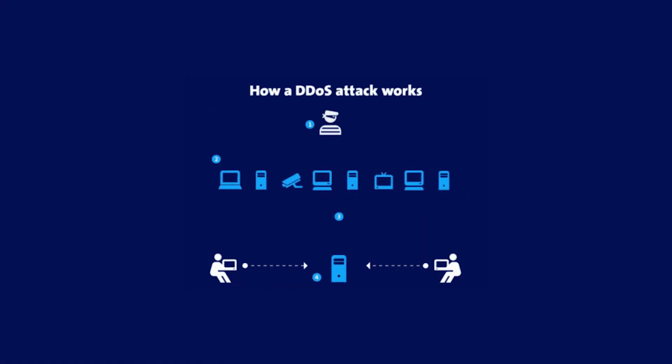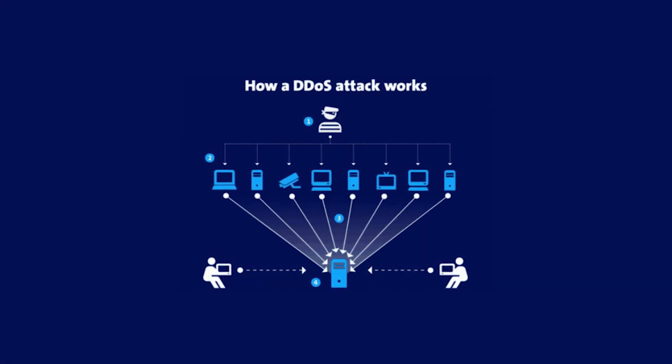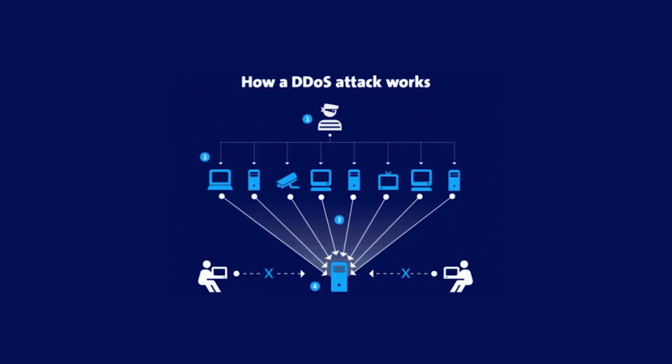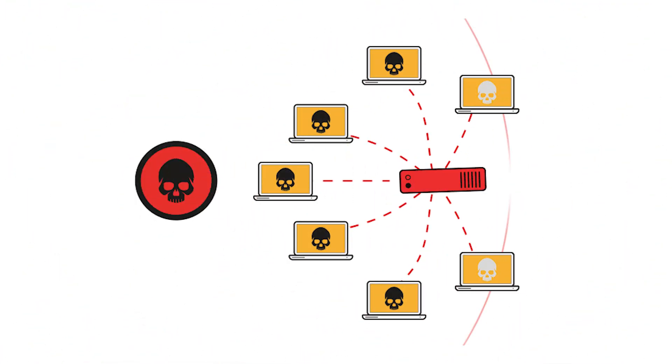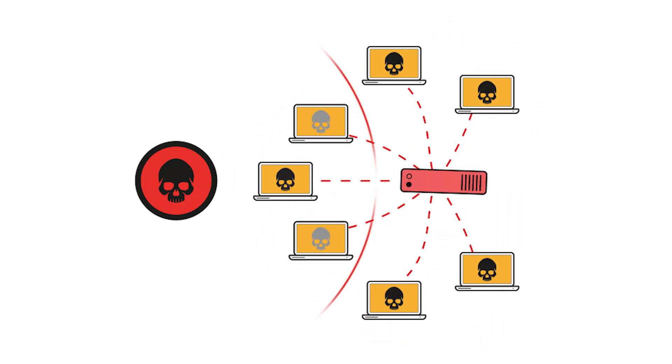So how does this happen? Well, it's not just one computer causing the chaos. It's a distributed network of compromised computers, often called a botnet — like zombie computers secretly controlled by the attacker. The attacker remotely commands this army to send a flood of requests to the target simultaneously, and the sheer volume overwhelms the target servers, making it nearly impossible for legitimate users to access the website or service.